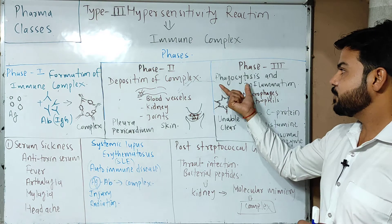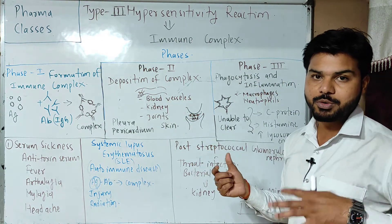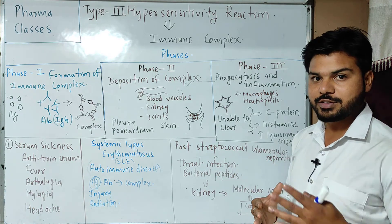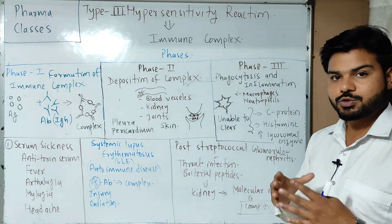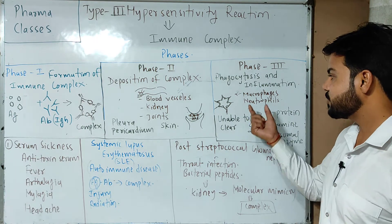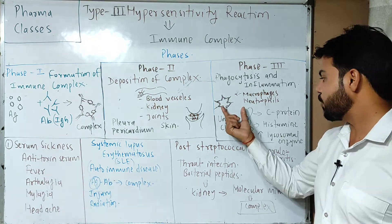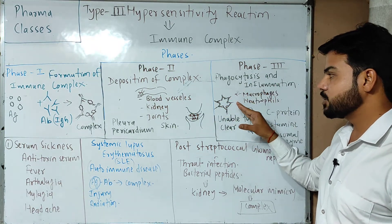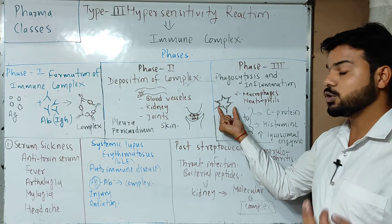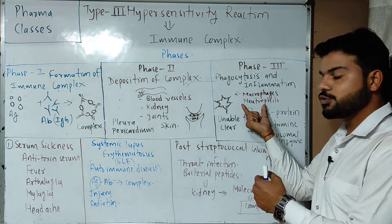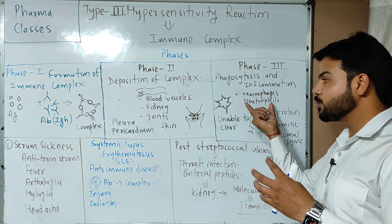The third phase is phagocytosis. After the formation of this complex, our body's immune mechanism — cells like macrophages and neutrophils — attacks the complex to clear it. However, some complexes which are very small in size are difficult to clear, and phagocytosis occurs in the particular tissue area.